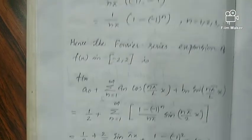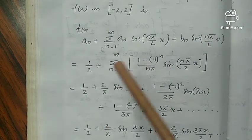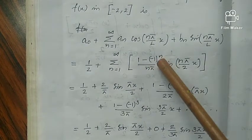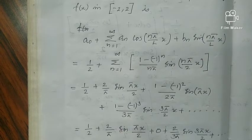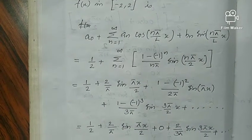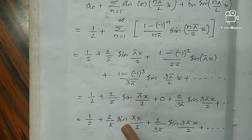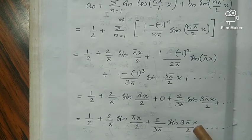The series is 1/2 plus sigma n equals 1 to infinity of [1 - (-1)^n]/(nπ) times sin(nπ/2 × x). Further, if you want the expansion, we will get 1/2 plus 2/π sin(πx/2) plus 2/(3π) sin(3x/2) plus...